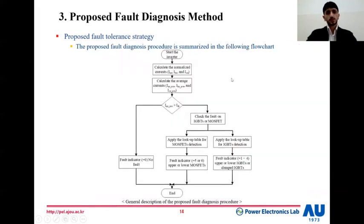The proposed fault detection strategy is summarized in this slide. Here we start by calculating the normalized current and voltage compared with the threshold value. Based on the result of the output detection, if it is from one to four, that means a fault in the IGBT switches from upper to lower, one to four, and five or six represent the MOSFET, which is zero. That means there is no fault.